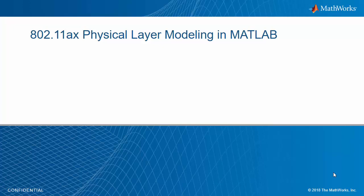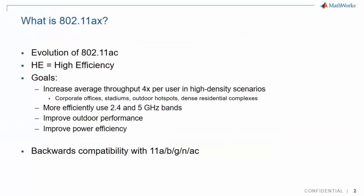This video introduces the 802.11ax standard and how to model it with Wireless LAN Toolbox. 802.11ax is the evolution of 802.11ac and is known as HE, or High Efficiency. The goals are to increase the average throughput per user in high-density scenarios, use the 2.4 and 5 GHz bands more efficiently, and improve outdoor performance and power efficiency.